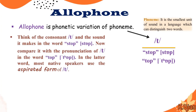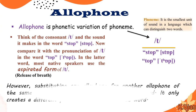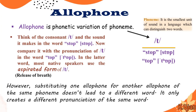Think of the consonant /t/ and the sound it makes in the word 'stop'. Now compare it with the pronunciation of /t/ in the word 'top'. Most native speakers use the aspirated form of /t/ in 'top'. Aspirated means there is a release of breath. This pronunciation difference is known as an allophone in linguistics. However, substituting one allophone for another allophone of the same phoneme does not lead to a different word — it only creates a different pronunciation of the same word.